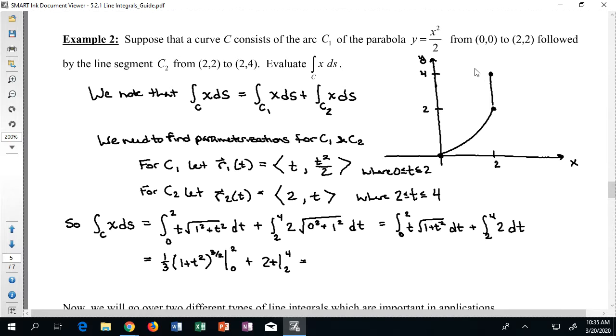Ultimately this is gonna be 5 to the 3 halves, wait hold on, 1 third times 5 to the 3 halves minus 1. When I plug in my next set of stuff I'm gonna get 8 minus 4 which is of course going to be 4. And so I have a final calculation that looks like this.